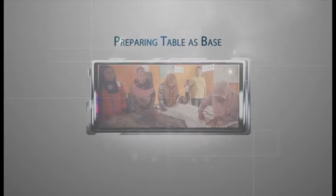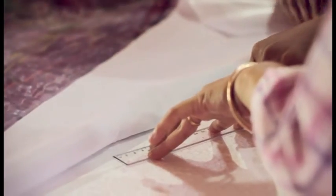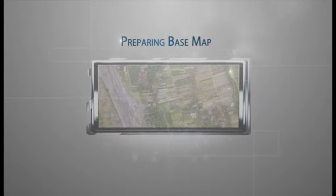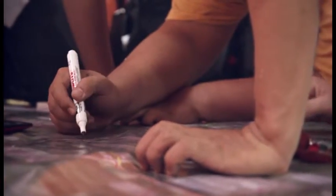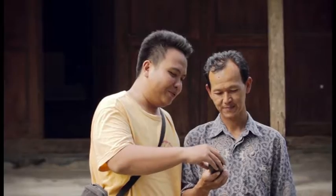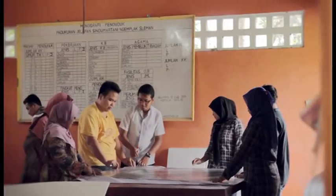A table is prepared as the base and set to match the scale and size of the 3D map. The base map used is a topographic map showing contours, rivers, roads, and results of GPS surveys. Students as facilitators handle this preparation, and base maps are printed on tarpaulin sheets.